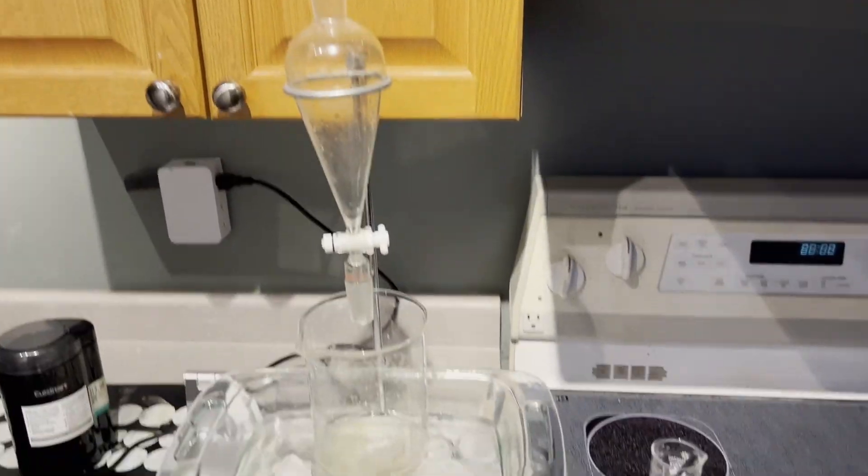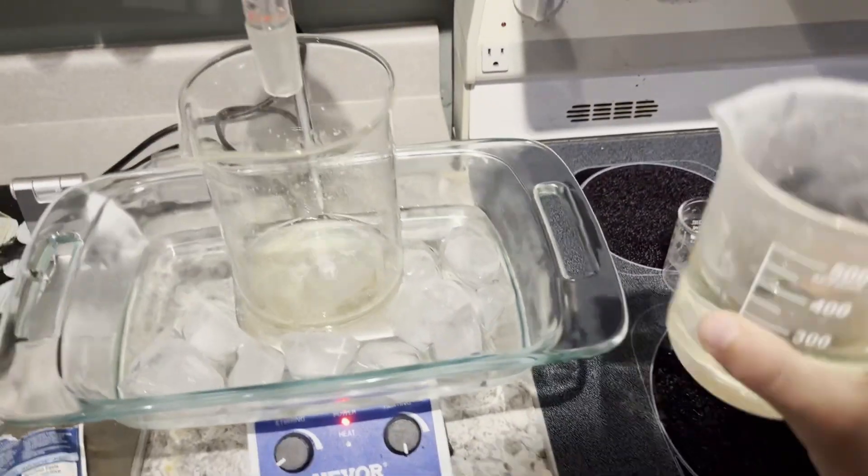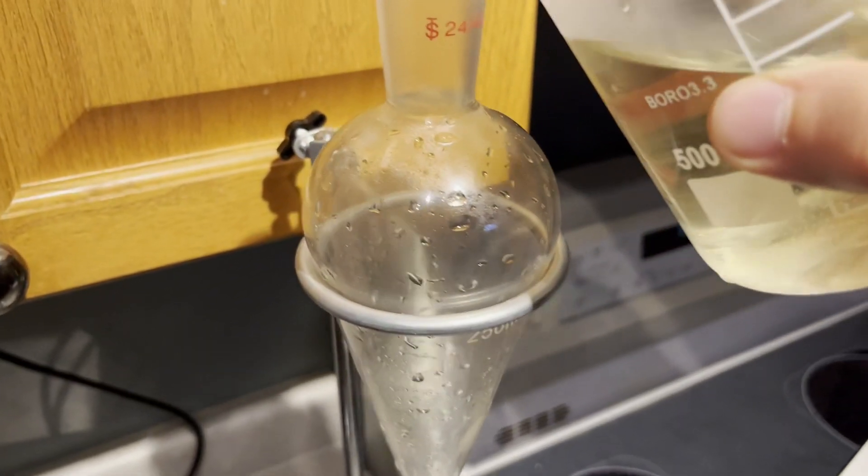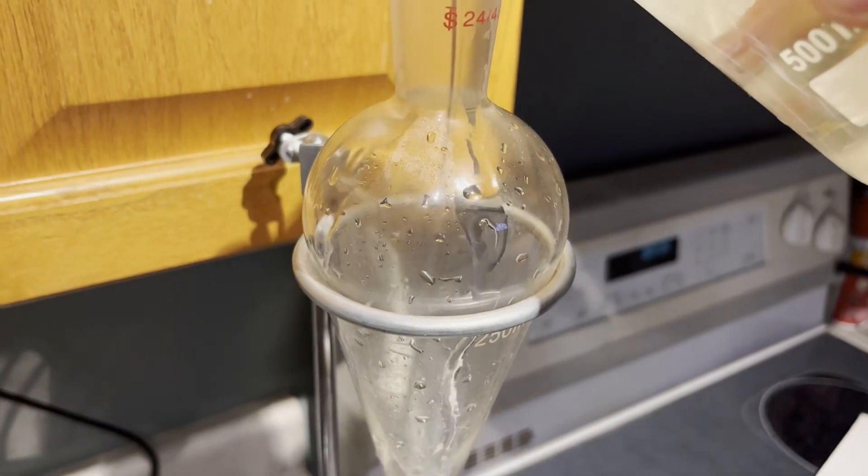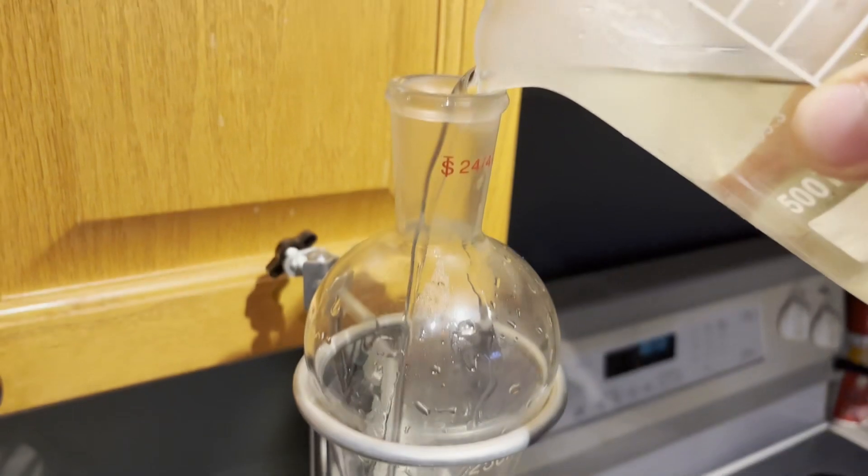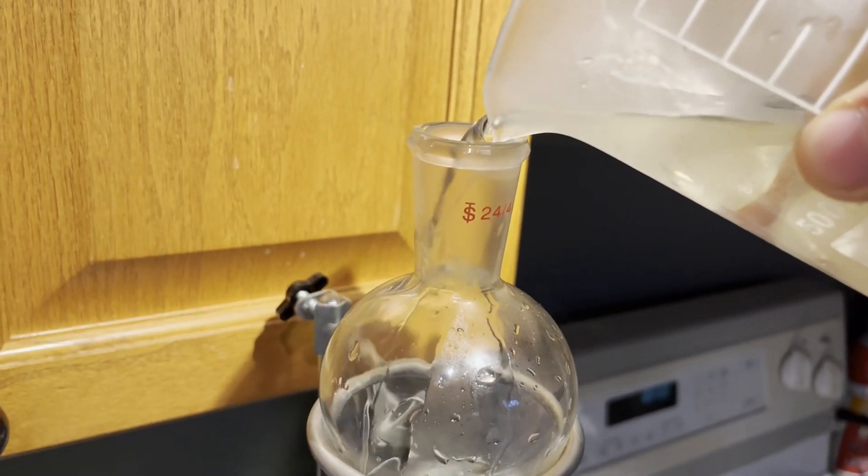Once dissolved, the solution is placed into an ice bath and the temperature is brought below 10 degrees Celsius. The basified bleach solution comes out of the freezer at a temperature of about negative 10 degrees Celsius and is added to the separatory funnel.